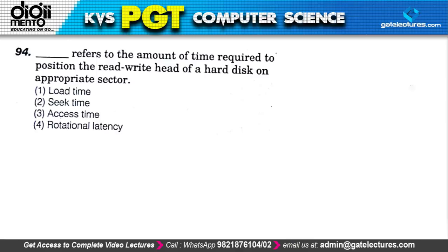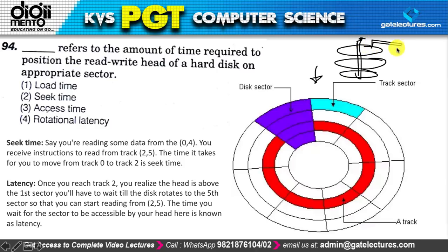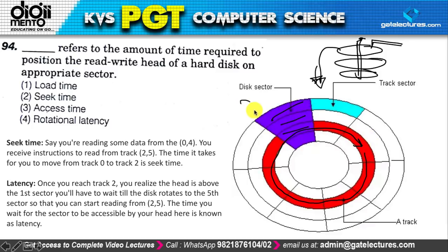Question 94: dash refers to the amount of time required to position the read-write head on a hard disk. Hard disks have multiple disk platters mounted on a spindle with a read-write head. The disks are organized into tracks and sectors. Moving the read-write head to the correct track requires seek time. This is related to disk access time concepts covered in computer architecture videos.